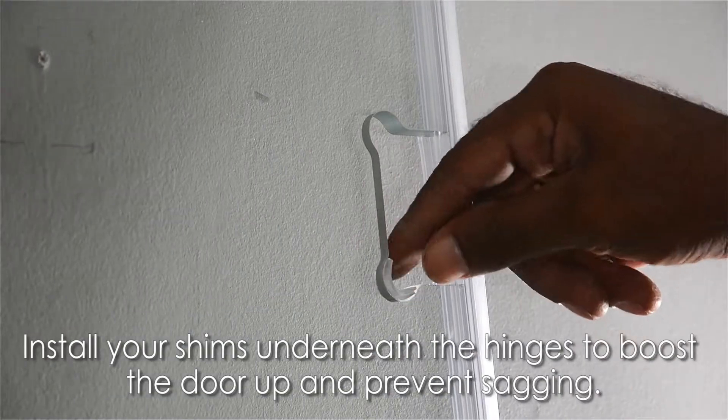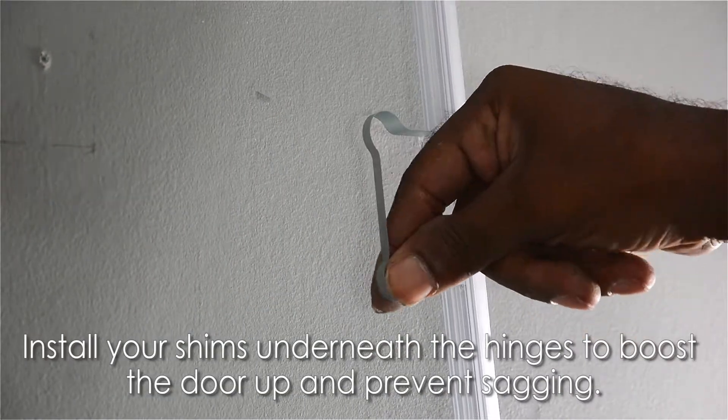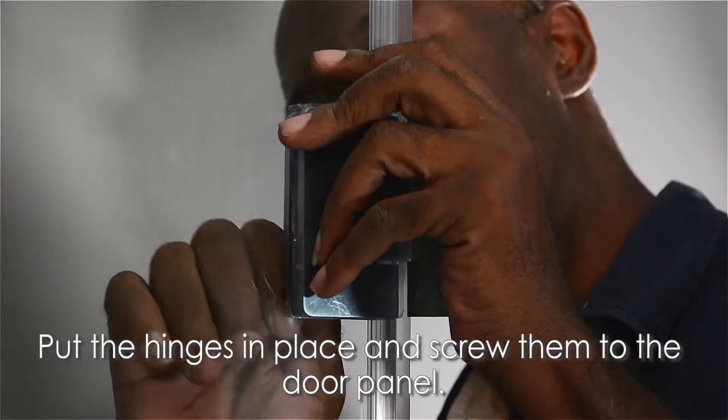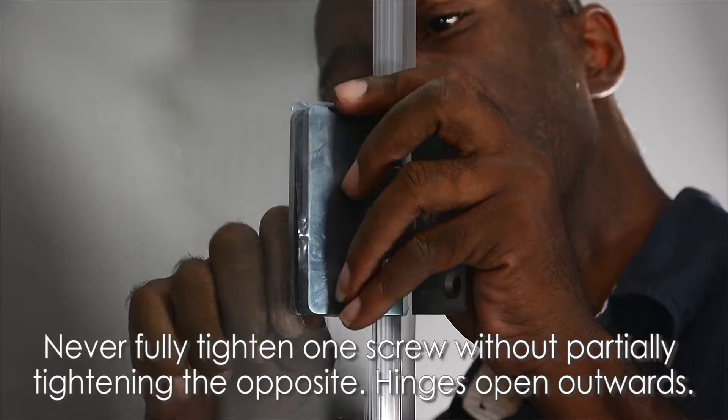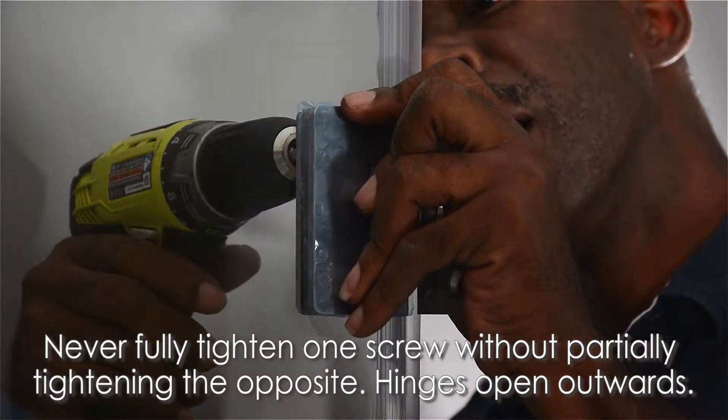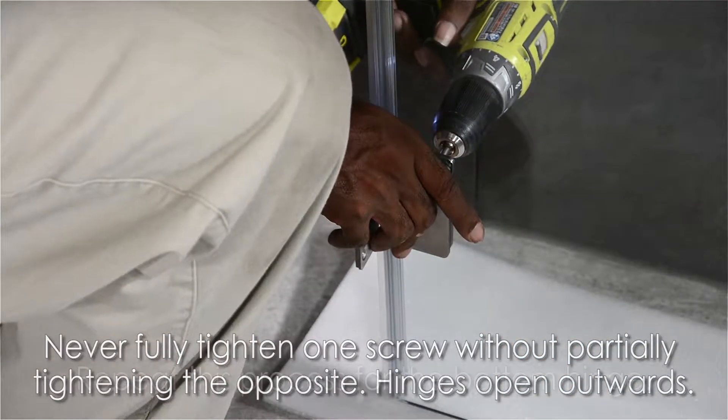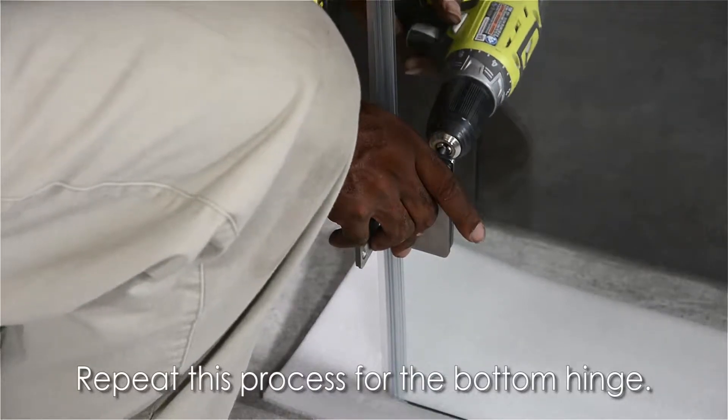Next, install your shims underneath the hinges to boost the door up and prevent sagging. After that, put your hinges in place and screw them to the door panel. Never fully tighten one screw before partially tightening the opposite. The hinges should open outwards. Repeat this process for the bottom hinge.